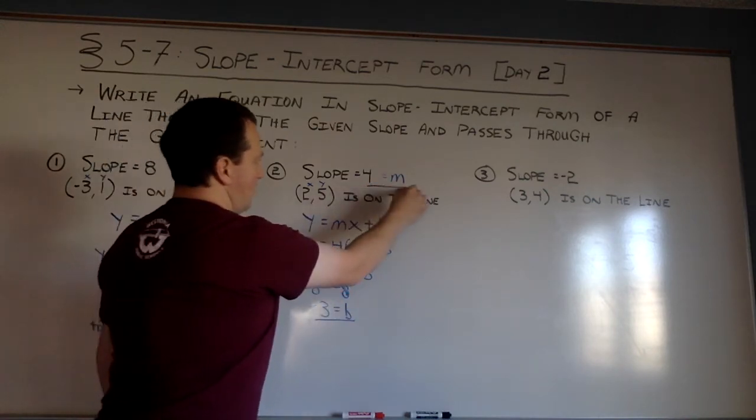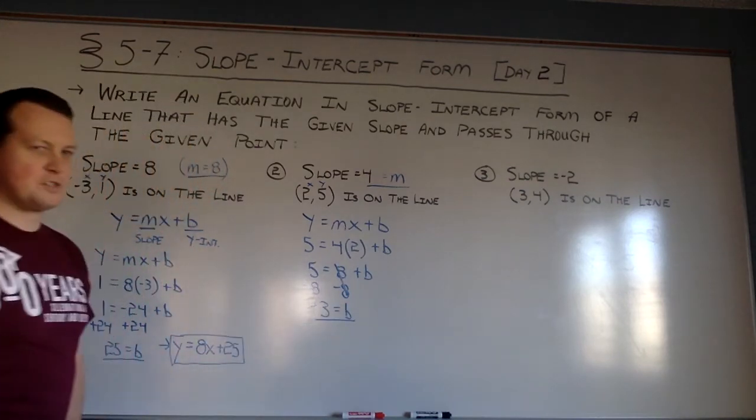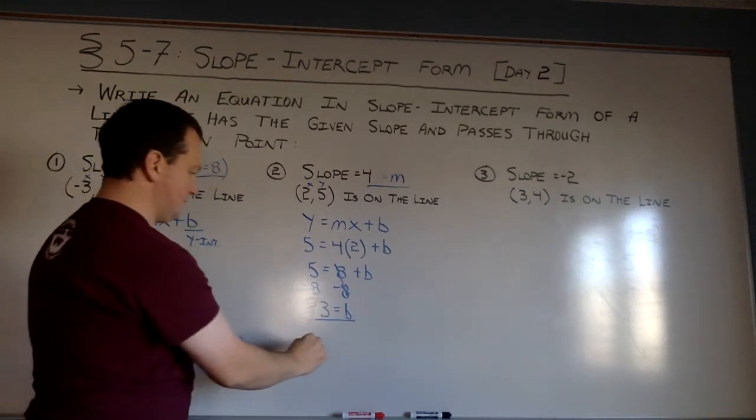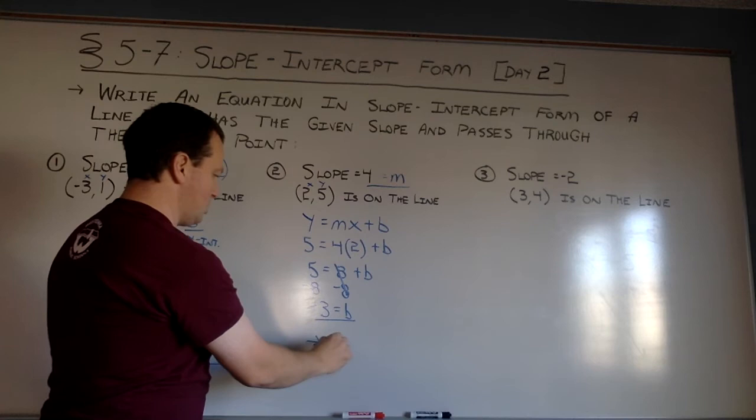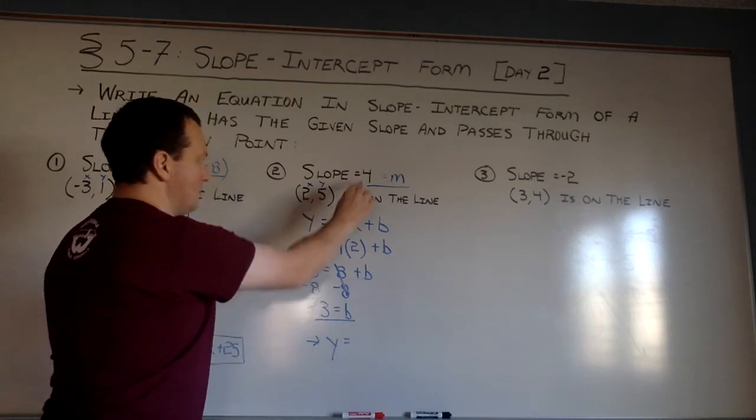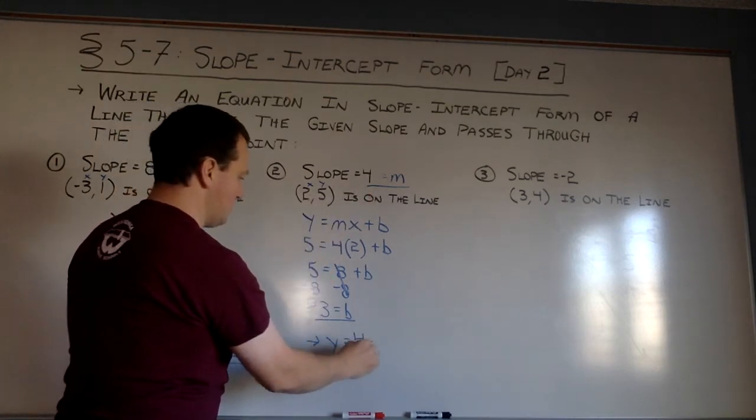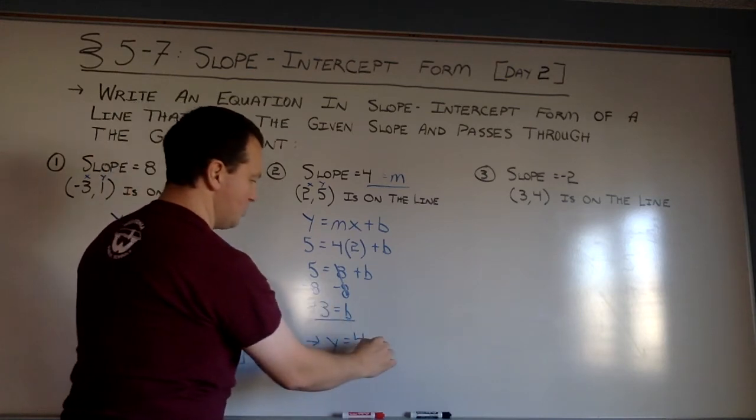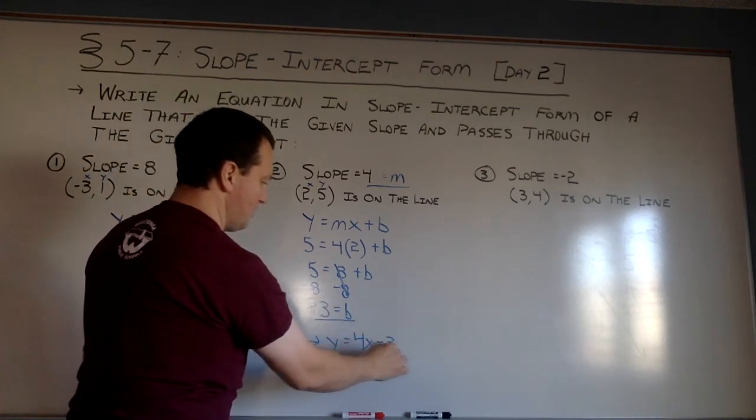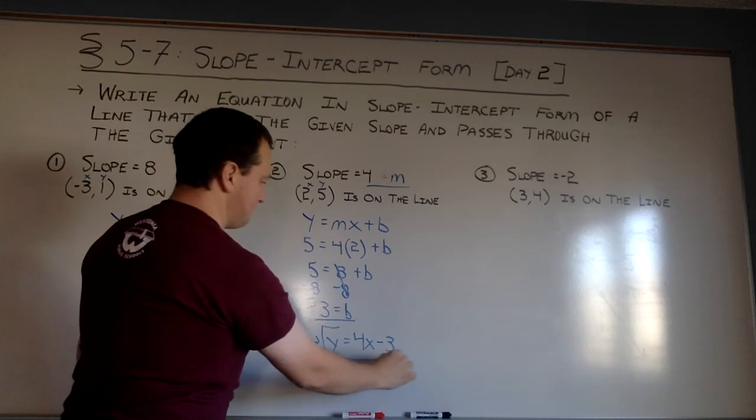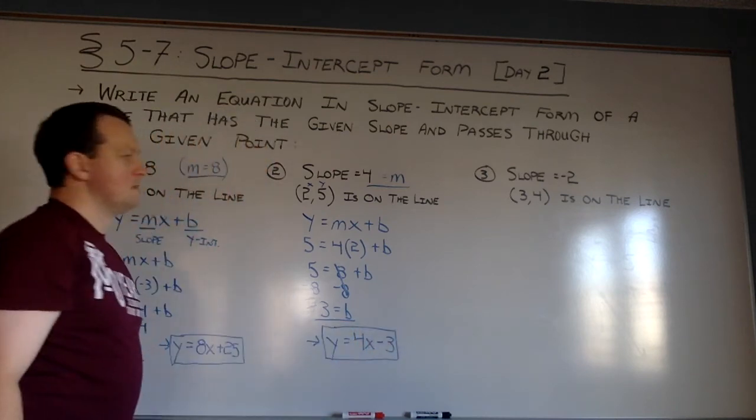So if m is 4, and b, the y-intercept, is negative 3, my final equation is y equals m, 4x, plus b, negative 3. So I can go plus negative 3, or just minus 3. There we have it.